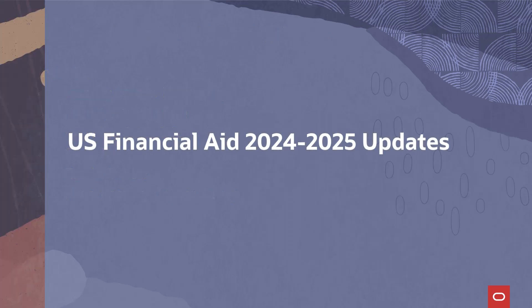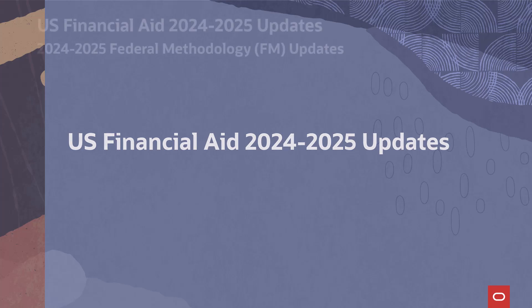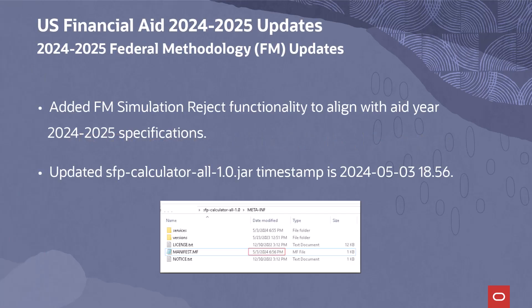US Financial Aid 2024-2025 Updates: An updated 2025 Federal Methodology (FM) JAR file was delivered. This includes modifications to the records, pages, and People Code for the FM Needs Analysis Calculator (NAC) and ISA. Added FM Simulation Reject Functionality to align with Aid Year 2024-2025 specifications.